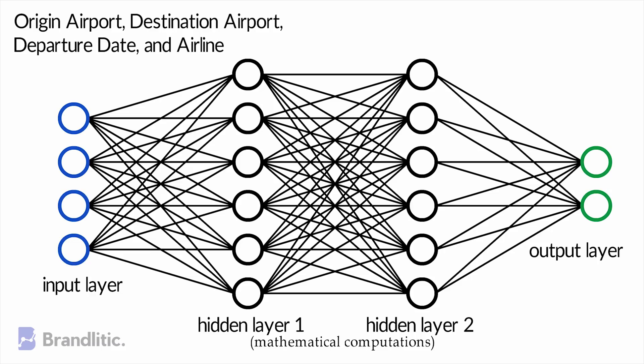Well, each connection between neurons is associated with the weight, and this weight dictates the importance of the input value. When predicting the price of an airplane, the departure date is one of the heavier factors than others. Hence, the departure date neuron connection will have a higher weight.